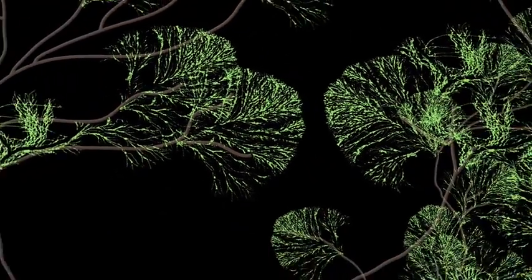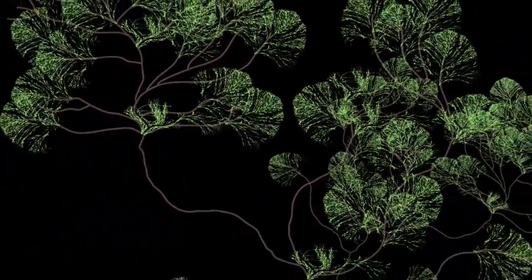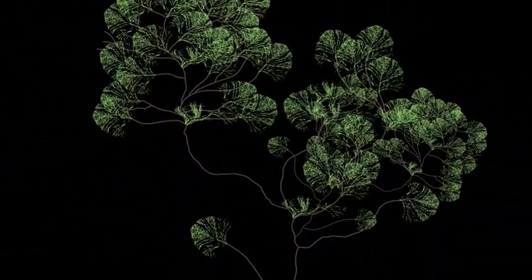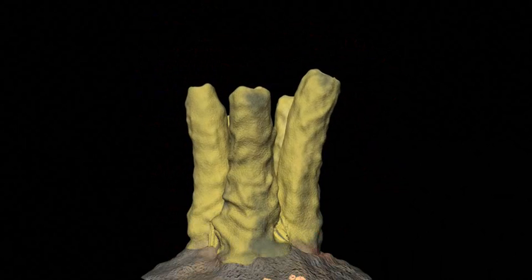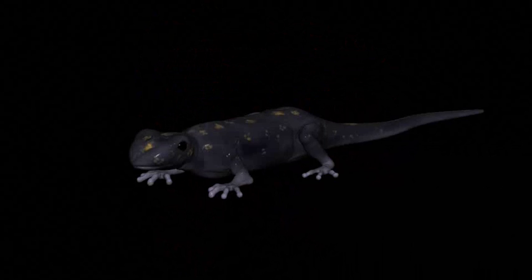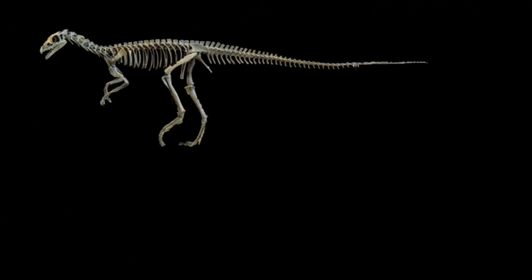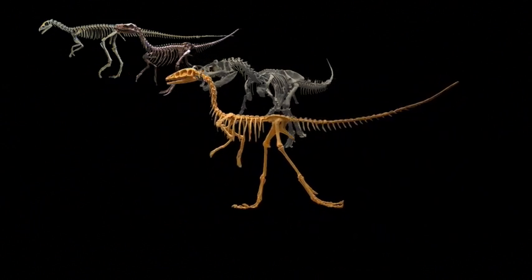The tree of life illustrates countless speciation events. Each common ancestor also represents at least one speciation event. Current estimates from the fossil record and measured mutation rates place the time required for full reproductive isolation in the wild at about 3 million years on average.